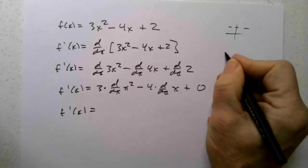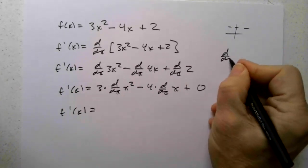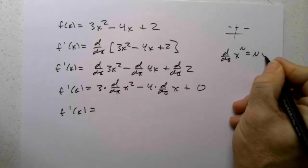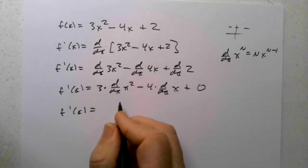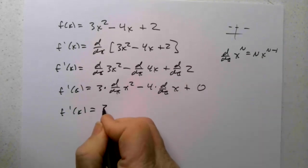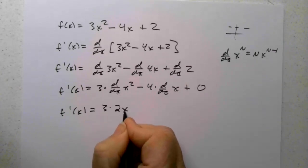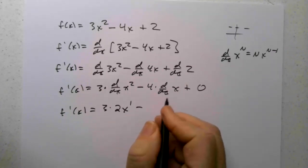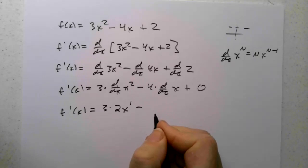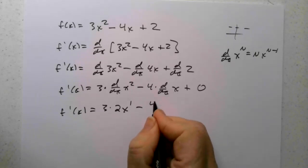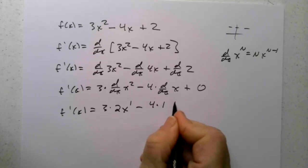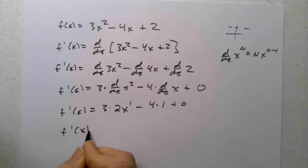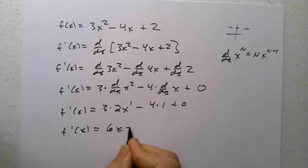The derivative of x squared: remember, the derivative of x to the n is n times x to the n minus 1. So the derivative of x squared is 2x to the 2 minus 1, or 2x to the 1st. The derivative of x to the 1st is 1 times x to the 0, or the slope of x is just 1. So we get f prime of x is 6x minus 4.